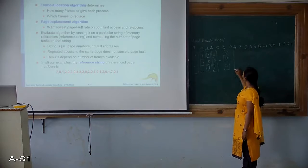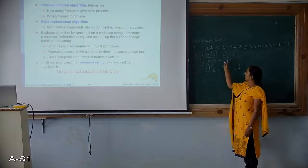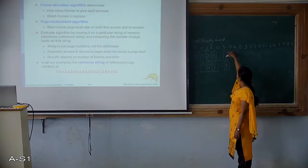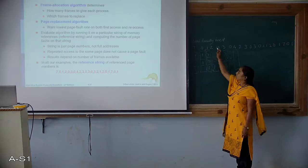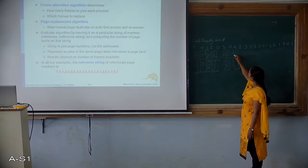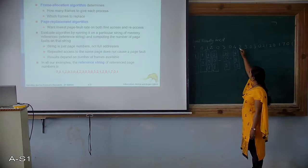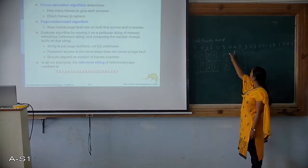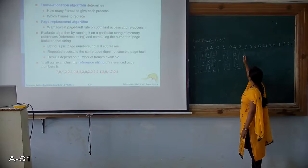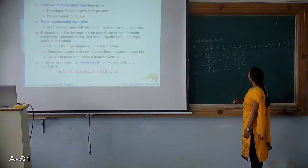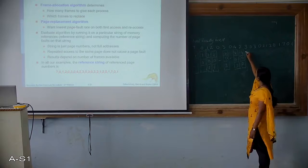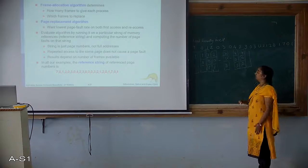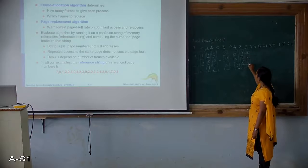0 is present — no replacement. 4 is needed — which page was not used in the near past? 3 was used recently, 0 was used recently, 2 is the one which is farthest back. So replace 2 with 4. Frames: 4, 0, 3. Now 2 is required again — which was least recently used? 0 and 4 are recent, 3 is the farthest. So replace 3 with 2. Now 3 is required again — bring back 3. Which is not used in near past? 0 is the farthest. Frames: 4, 3 and 2.